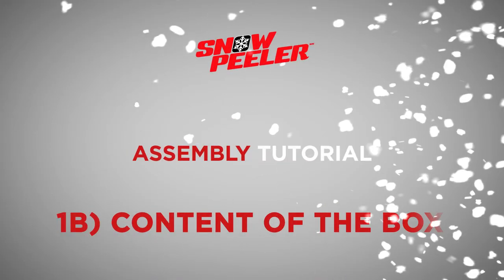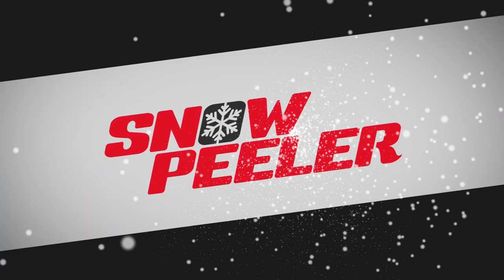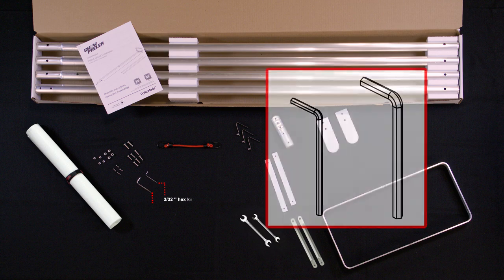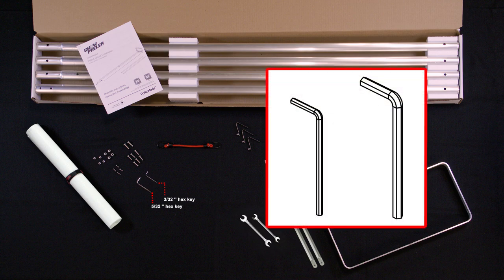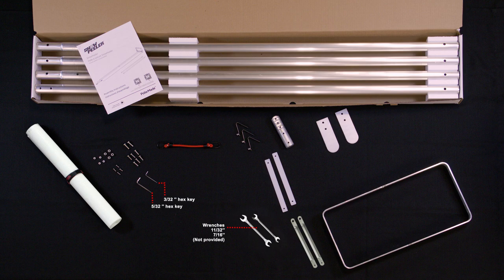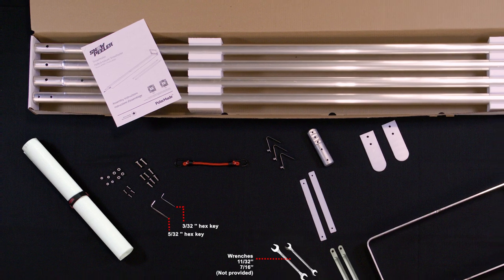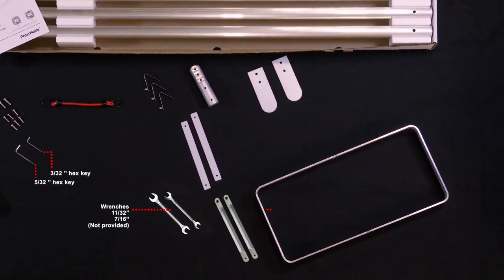Let's take an inventory of what you'll find in the box for Snow Peeler. For assembling your product we've included the following tools: one 3/32 inch hex key and one 5/32 inch hex key. To assemble your Snow Peeler you'll also need an 11/32 inch and a 7/16 inch wrench or an adjustable wrench which is not provided. You'll also find assembly instructions in the box.